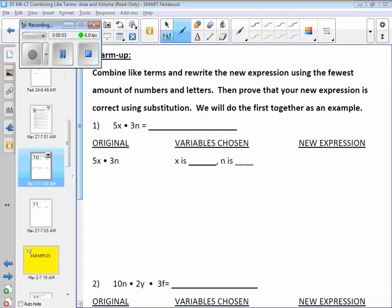Okay, taking a look at the warm-up, which we've already done. Here's the expression 5x times 3n. What do you get when you combine like terms, which we just did in the last exit ticket? Who remembers what to do, or what the answer is?